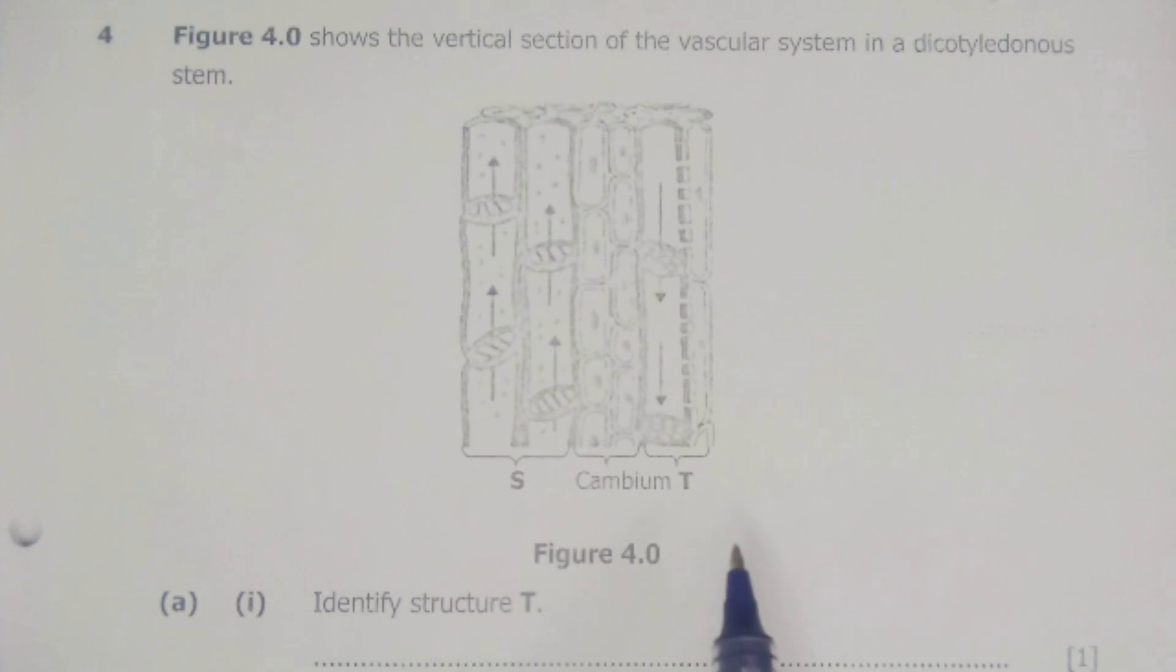Here we have the structure, we have S, we have the cambium and also T. The vascular bundle always has two structures, xylem and phloem as well as the cambium separating the two bundles.